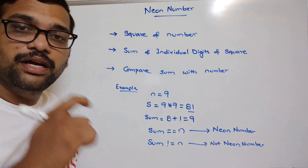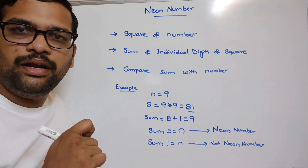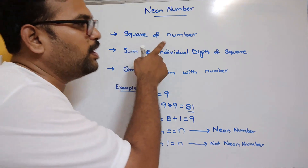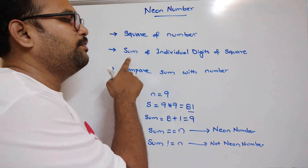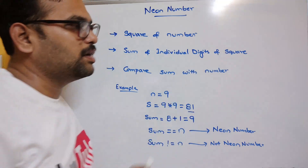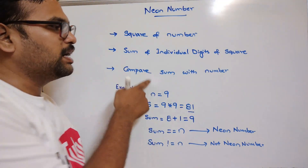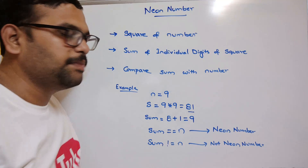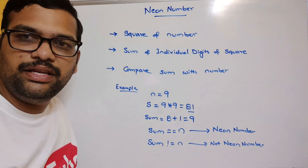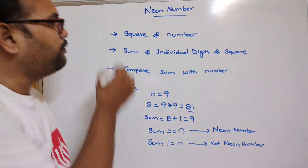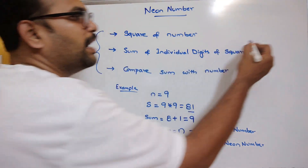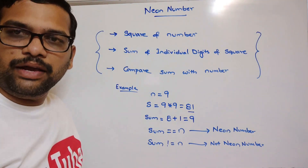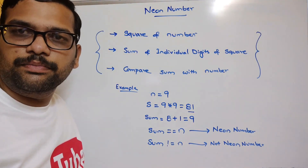So this is how we find whether a given number is a neon number or not. To recap: first, read the number from the keyboard; then find the square of that number; find the sum of individual digits of that square; and compare the sum with the number. If both are equal, it is a neon number. We'll follow these three steps and write the logic in Python.